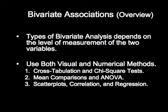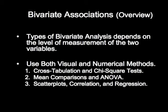We're going to talk about how to do a cross-tabulation, which is a visual method of showing the relationship between two variables. And we're going to do chi-square tests, which is a formal way of testing the strength of that relationship. Likewise, we're going to compare means visually, just like we did in differences in means tests, and formally by doing what's called analysis of variance.